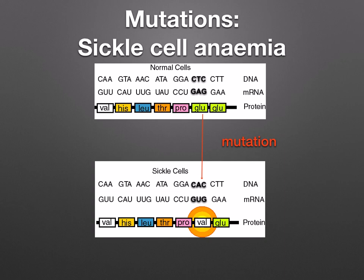Now if you have a look at this diagram, notice how a base substitution where CTC is now CAC — so thymine has been replaced by adenine — is going to result in a different amino acid being coded for. When thymine has been substituted by adenine, the amino acid valine will result.